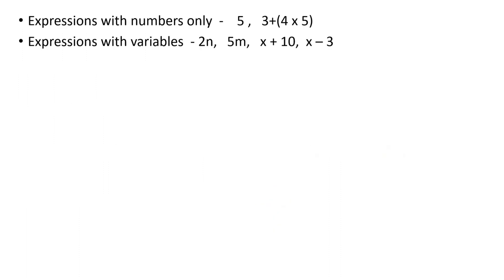Expressions with numbers only — for example, if you just have numbers like 5, 3 plus 4 times 5, or any numbers, those expressions are called expressions with numbers. If you have some letters or variables along with that, then we call them expressions with variables. For example, 2N, 5M, X plus 10, X minus 3.